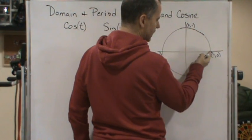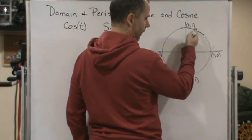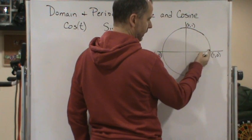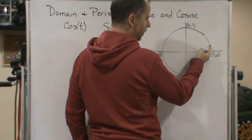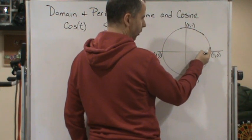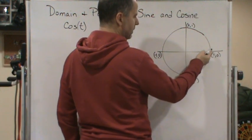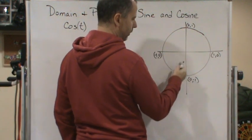Remember, we're taking t, t is the measurement of the arc length from zero, right? So zero's here, and we're measuring the distance from zero. So t is a real number that goes all the way around.